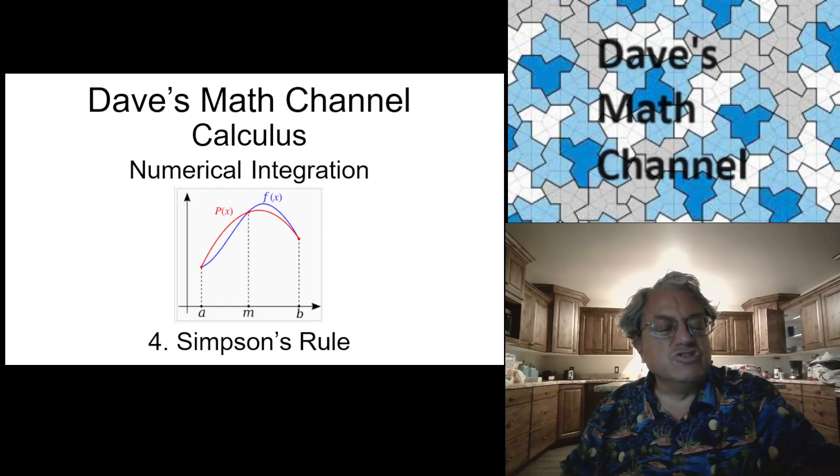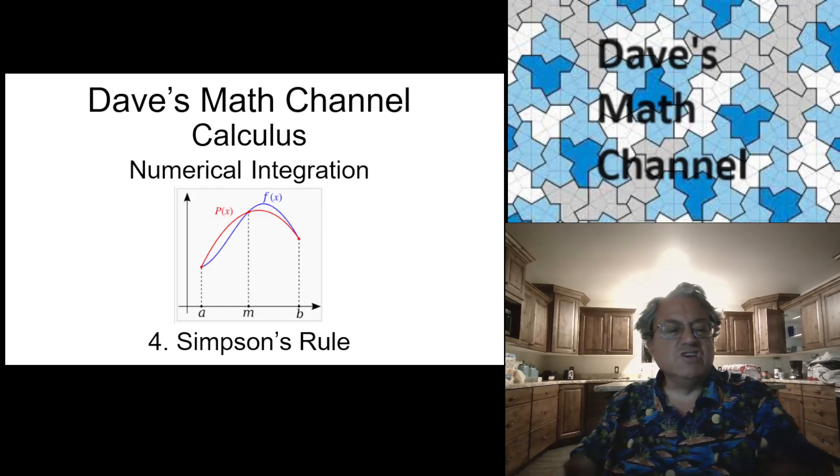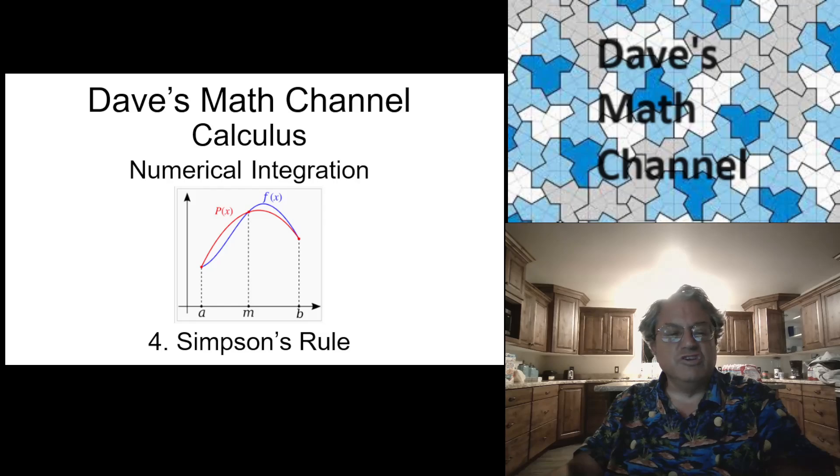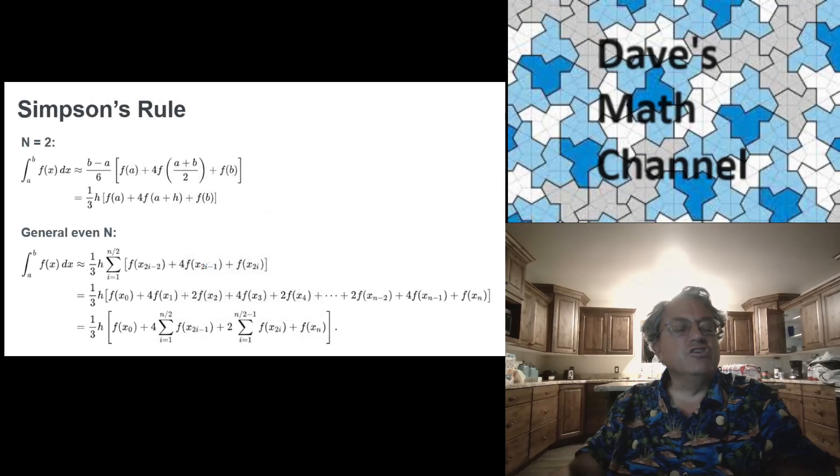And then what you do is you take for every two consecutive intervals, you take the values of f of x on the endpoints, you also take the value of f of x in the middle. And it turns out that for any three points in a plane, you can always find a parabola that passes through those three points. So that's what you do. You replace the function with a parabola that passes through the same three points. And it turns out that this gives you a very accurate estimate of the integral. And if you want to get more accurate, you can do more than two points. You can do any even number of points. You just take every two consecutive subintervals and put the parabola that fits those three points. And if you do that, you get a nice formula.